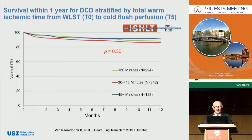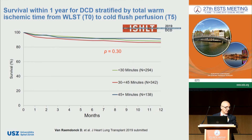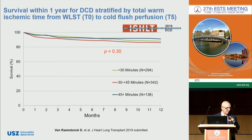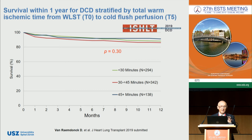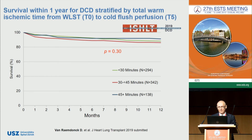This is an interesting dataset: warm ischemic time, defined as interval 3 — the interval from withdrawal to cold storage — was divided into three groups: under 30 minutes, 30 to 45 minutes, and over 45 minutes, and correlated with one-year survival. These time points did not have any influence on recipient survival.